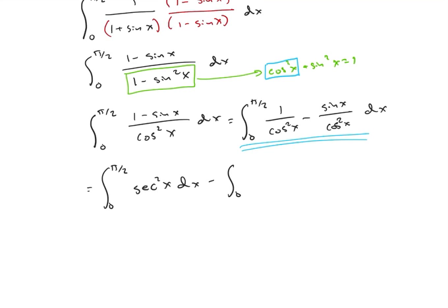And then we're going to have 0 to pi over 2 of sine of x over cosine squared of x. So sine of x over cosine of x is tangent of x, and then 1 over cosine of x is secant of x.